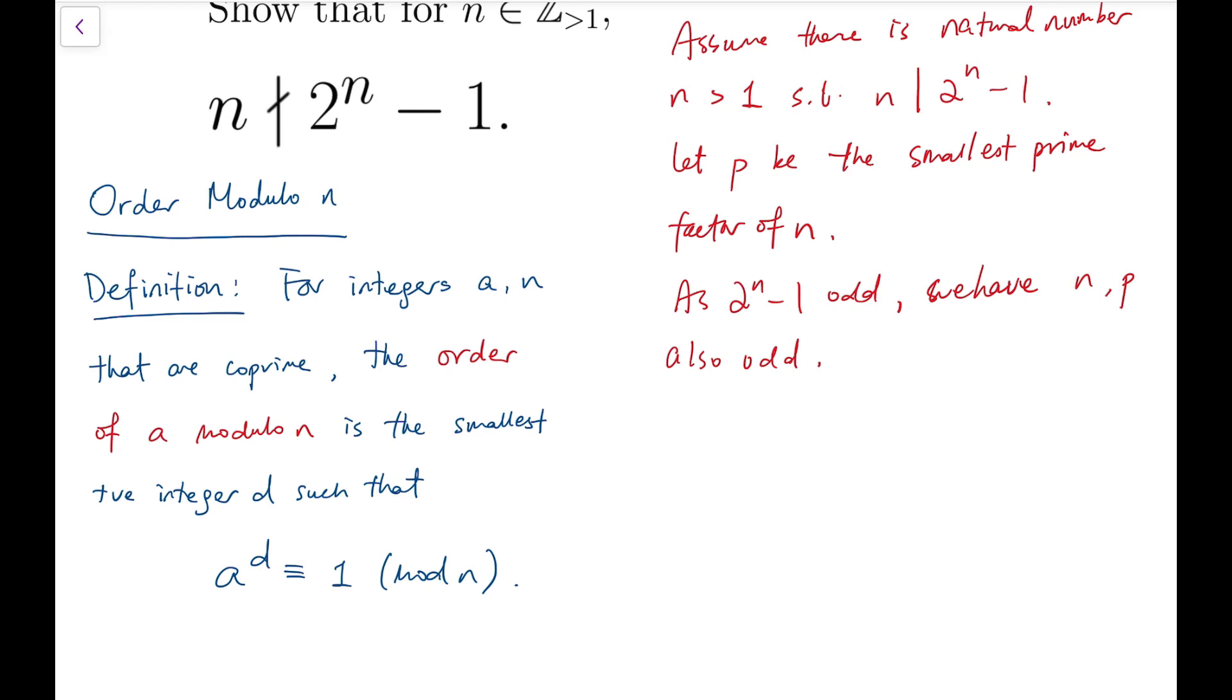Now, as n divides 2 to the power n minus 1, so we know that p also divides 2 to the power n minus 1. Or, we say that 2 to the power n is congruent to 1 mod p.